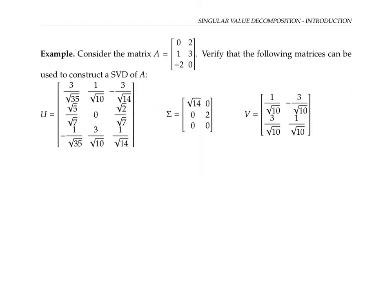Let's consider the three by two matrix A given here, and we're given three other matrices: U, which is three by three; Σ, a three by two diagonal matrix; and V, a two by two matrix. We're asked to verify that U, Σ, and V can be used to construct a singular value decomposition of A. In other words, we want to show that A equals U times Σ times V transpose. To make sure we have a legitimate SVD, we should also check that U and V are orthogonal matrices.